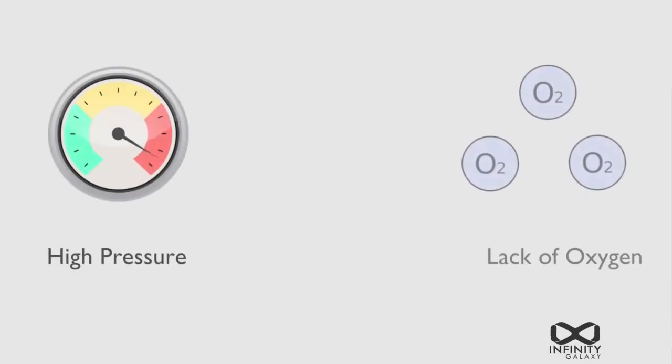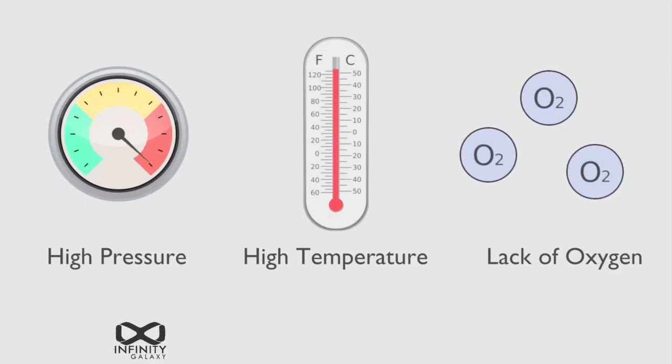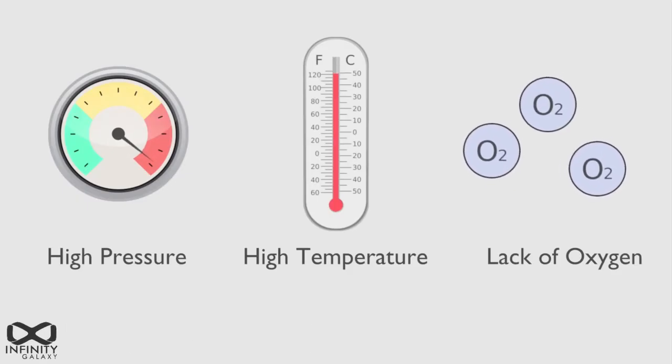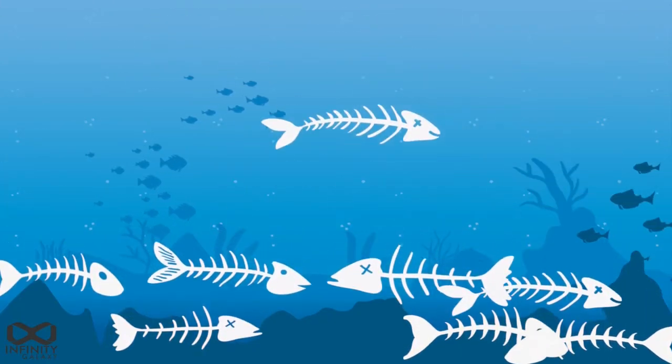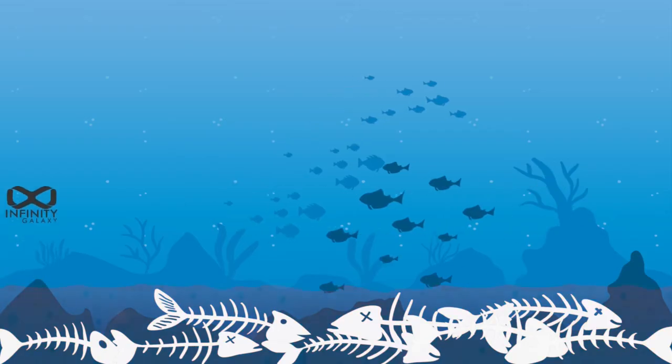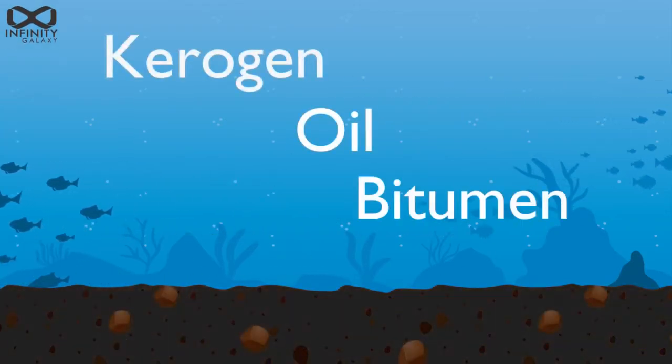These conditions include high pressure, lack of oxygen, and high temperature, all of which caused the fermentation and chemical change of organic molecules. As a matter of fact, high pressure and temperature above 50 degrees Celsius result in the conversion of organic substances to kerogen, bitumen, or oil.